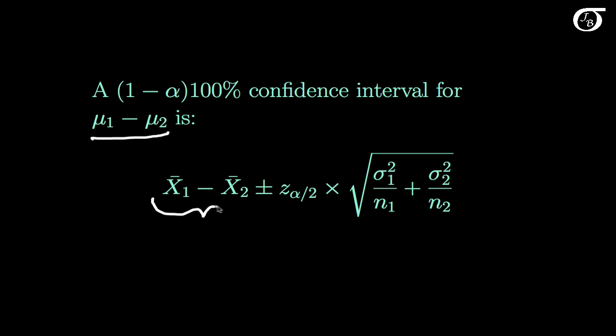And so this is our estimator of that difference, and then we add and subtract this margin of error. And the margin of error is made up of two parts.